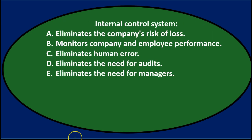Next question: Internal control system — A. Eliminates the company's risk of loss. B. Monitors company and employee performance. C. Eliminates human error. D. Eliminates the need for audits. Or E. Eliminates the need for managers.